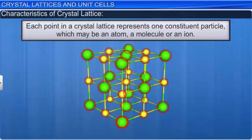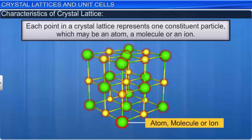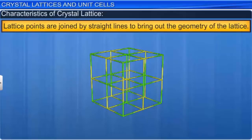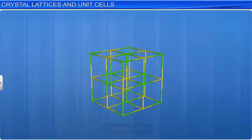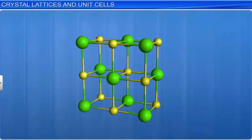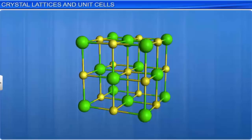Lattice points are joined by straight lines to bring out the geometry of the lattice. A crystal lattice can be subdivided into several cells known as unit cells. A unit cell is defined as the smallest portion of a crystal lattice which, when repeated in different directions, generates the entire lattice. A unit cell represents the shape of the entire crystal, and a crystal may consist of an infinite number of unit cells.